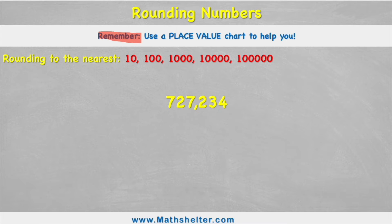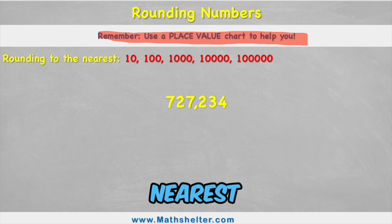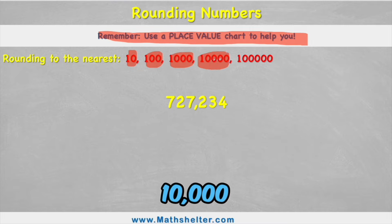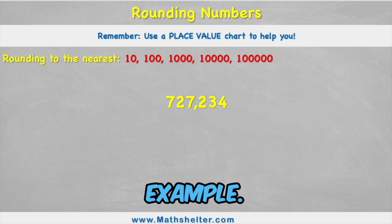So we're going to remember today that we need to use a place value chart to help us and we're going to be rounding to the nearest 10, 100, 1000, 10,000 and 100,000. So let's see what that means with this first example.